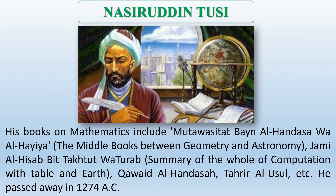His books on mathematics include Mutawassithat; Bayan al-Handasa wa al-Hayya (the middle books between geometry and astronomy); Jami al-Hissab with Takhtul wa Tura (Summary of the whole of computation with table and earth); Kawaid al-Handasa; Tahrir al-Usul, and others. He passed away in 1274 AC.